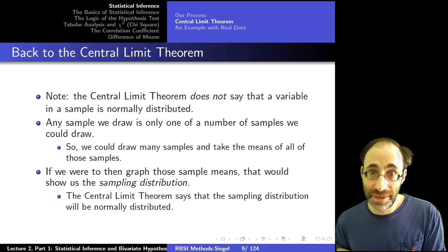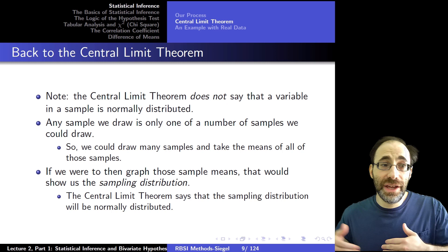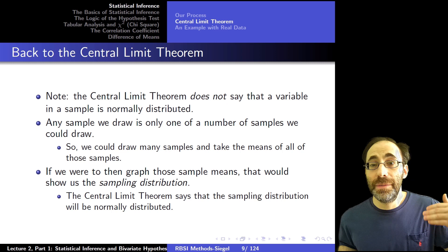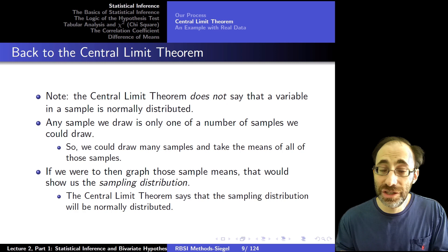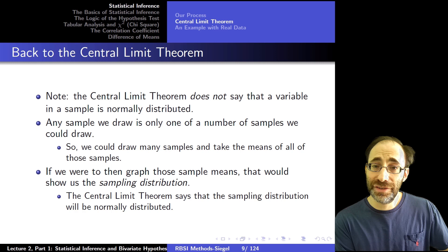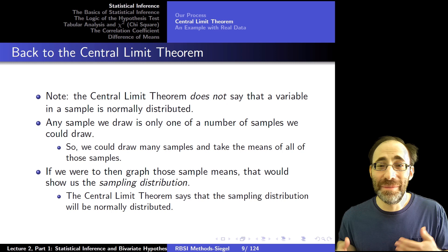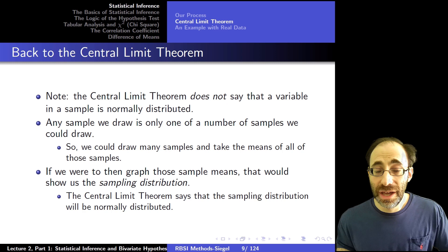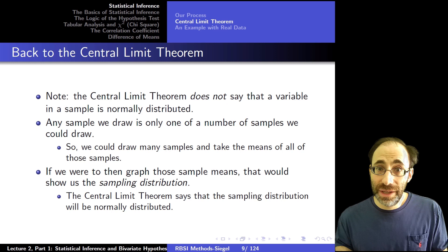If you then graphed all those sample means, that would be the sampling distribution. The sampling distribution is the thing that the central limit theorem says would be normally distributed. This is a key point worth reiterating: from this course on, there will be fewer slides overall but it's important to stop frequently, potentially go back and re-listen to certain things, or just pause to think. To reiterate: we take a sample, take the mean of the sample, plot that mean, then do it again and again — hundreds or thousands of times — taking repeated samples from the same population.